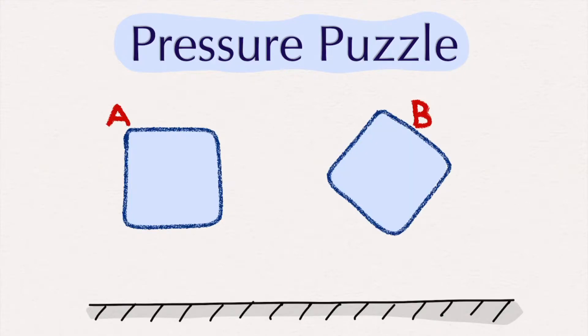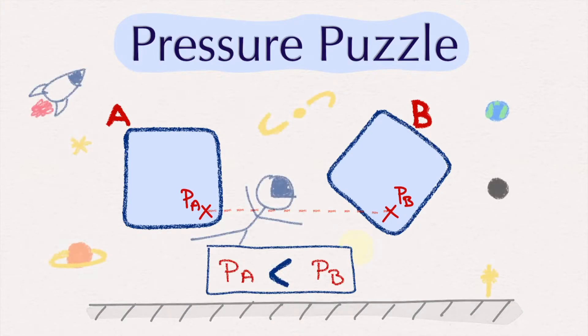Consider two containers, A and B, each with the same fluid and no air inside. When we measure the pressure at an equal height above the ground, will the pressure in container A be equal, greater, or smaller than the pressure in container B? And what if we put them into space? Well, let's find out.